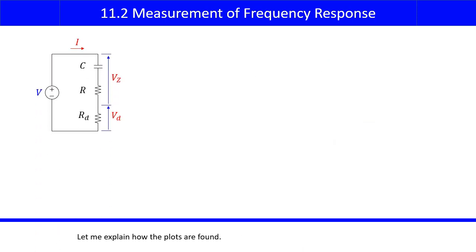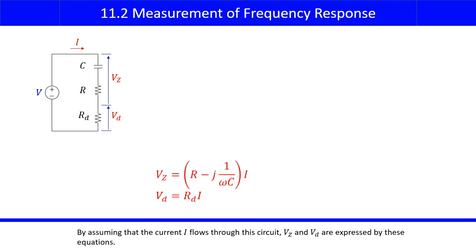Let me explain how the plots are found. By assuming that the current I flows through this circuit, VZ and VD are expressed by these equations.